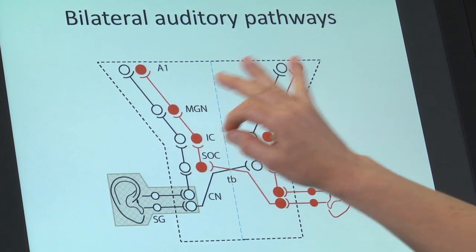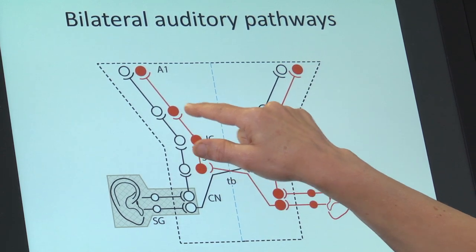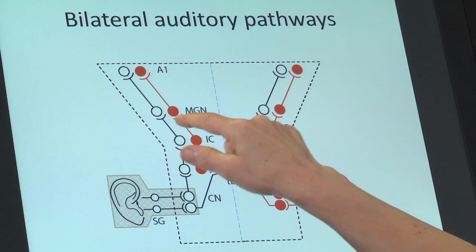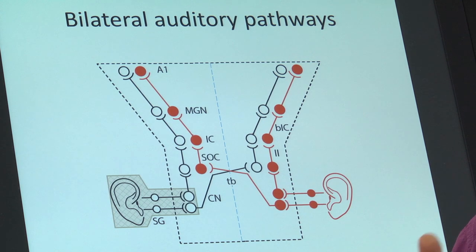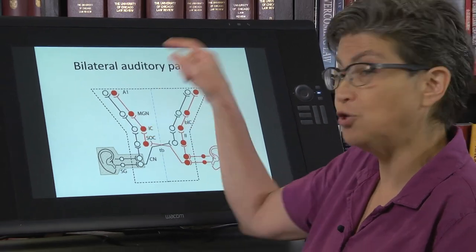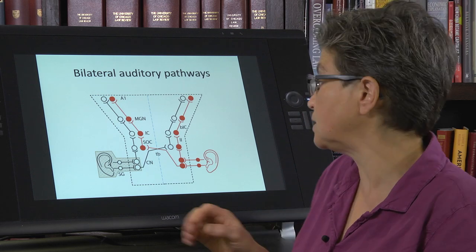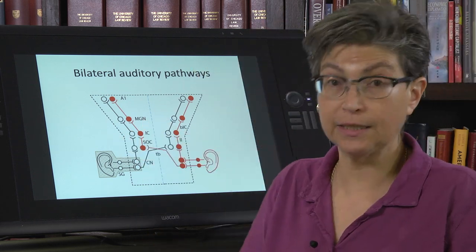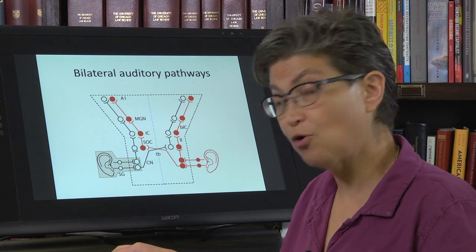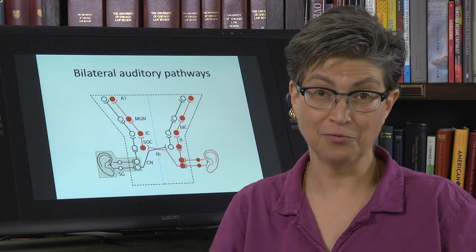After the cochlear nuclei, auditory information is shared via the superior olives, the inferior colliculus, and in both the medial geniculate and primary auditory cortex. This means you could obliterate a medial geniculate nucleus — the thalamic relay for auditory information — and it would have no obvious effect on hearing. So central auditory lesions beyond the cochlear nuclei are not clinically significant for deafness. We've now made our way through the medulla — that's the hardest part — and we're going to enter the pons.